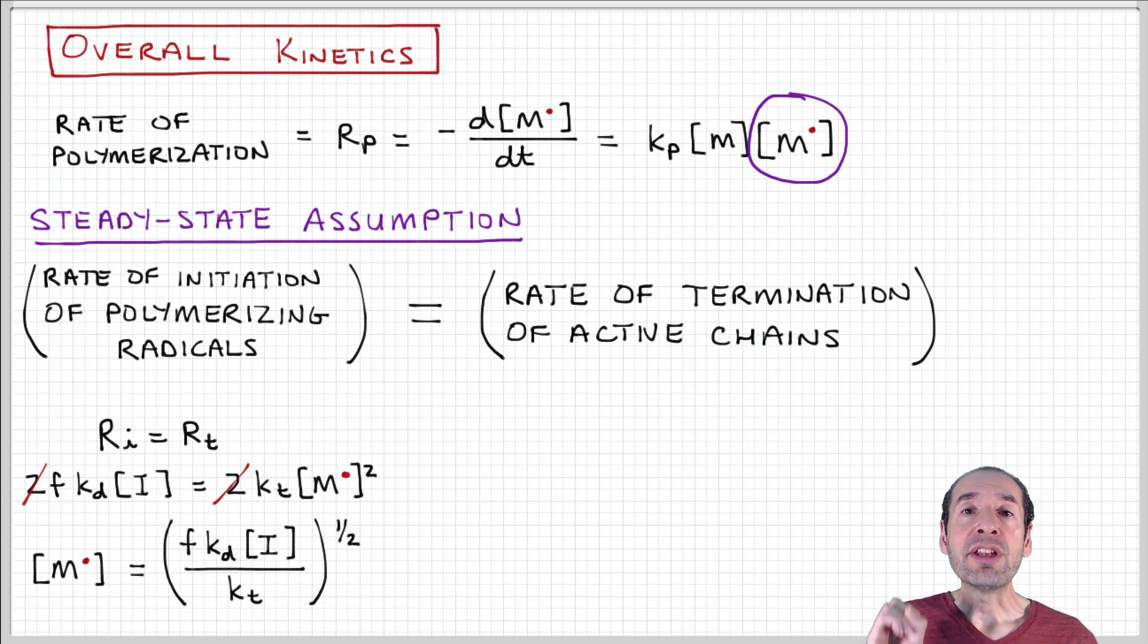So new active chains are being formed just as fast as active chains are being consumed to form dead polymer. If we make this assumption, it's convenient because we can then equate the rate laws that we obtained for initiation and termination as follows.